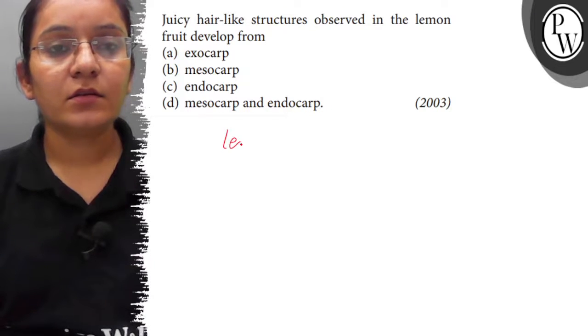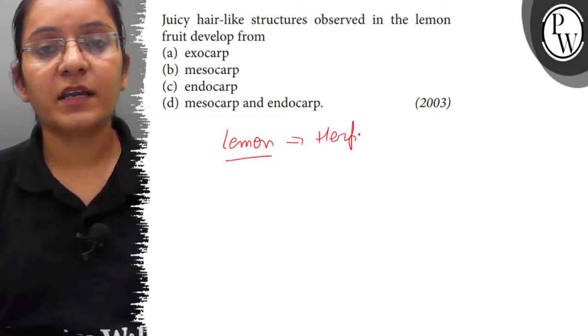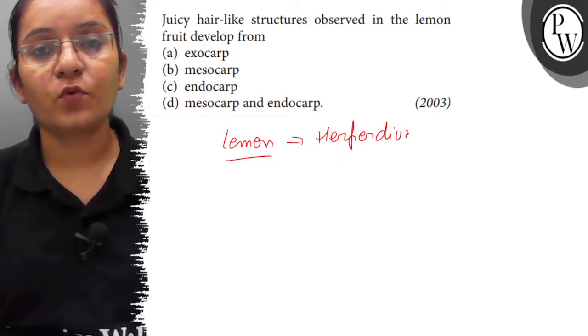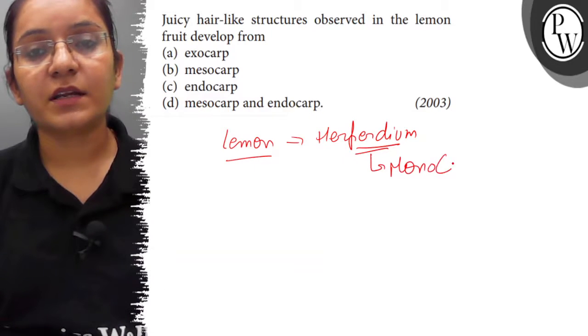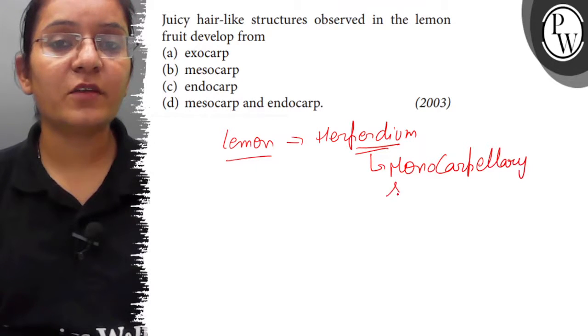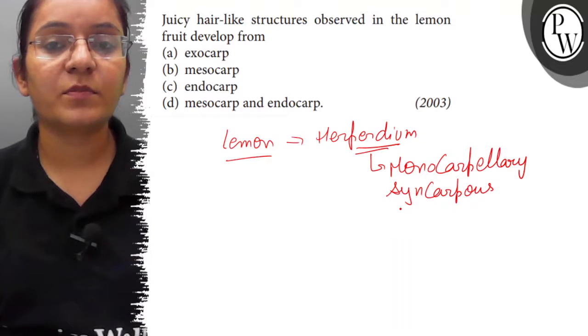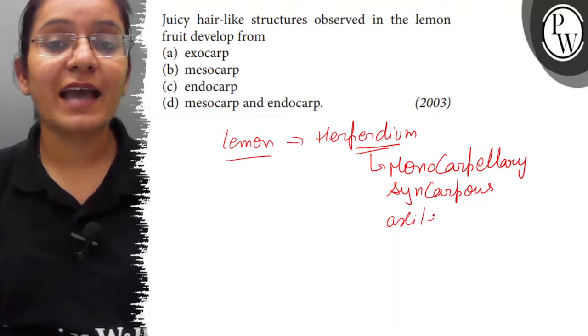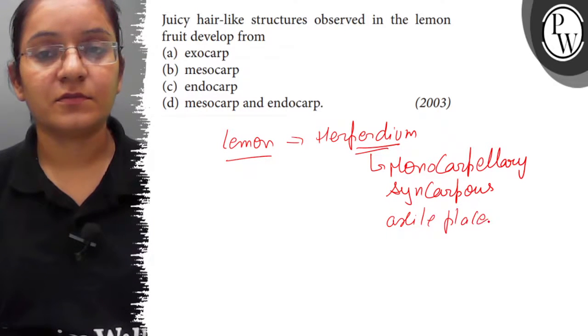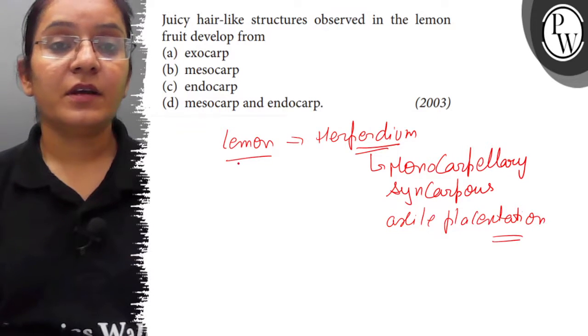Lemon is a Hesperidium type of fruit developed from Monocarpellary. It is a simple fruit, Syncarpous, and has Axile placentation.